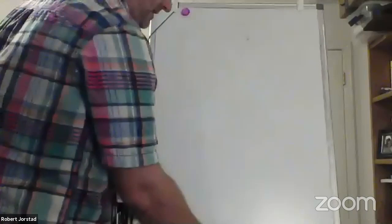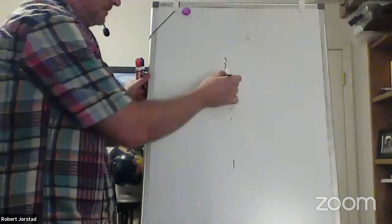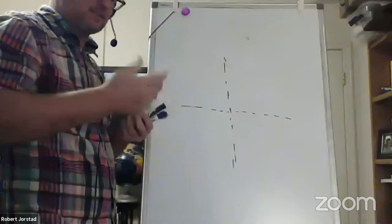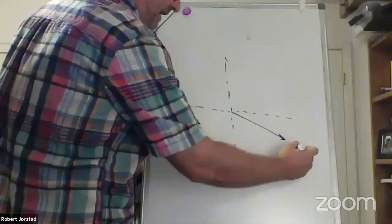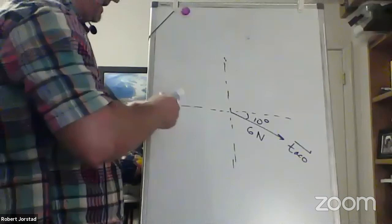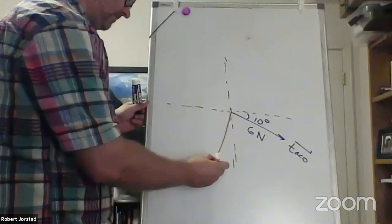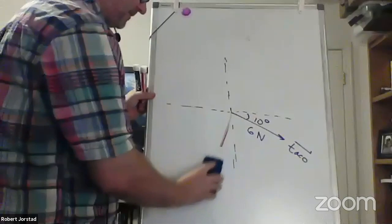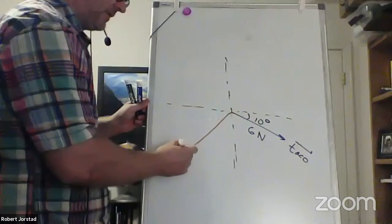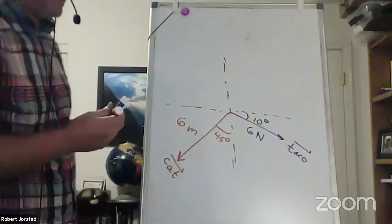Let me try and learn what a cross product is with a quick introduction. Let's say we have a vector — call it the taco vector — at 10 degrees with 6 newtons of force, and another vector — call it cat — at 45 degrees with 6 meters. Clearly we're not going to cross cat with taco; we've got to cross taco with cat. We'll pick up and do all of this again next time.